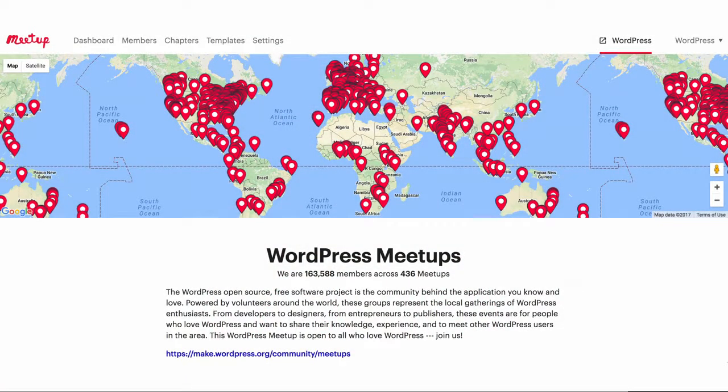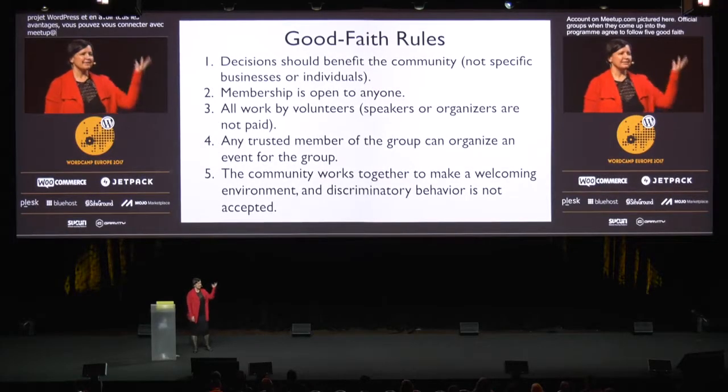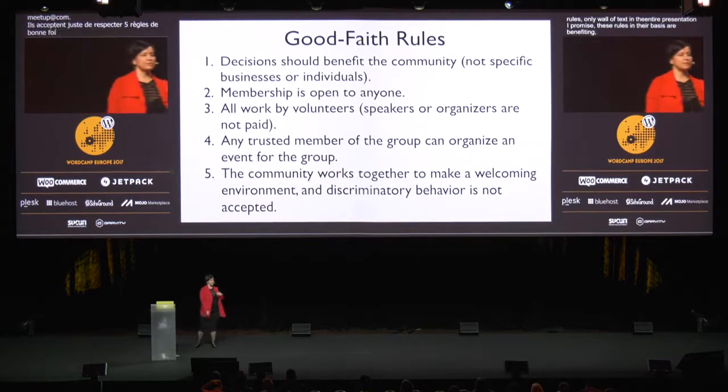The model is open. Anyone can start a meetup group. And if you want to be part of the WordPress open source project's program and take advantage of the benefits that come with that, you can join our chapter account on meetup.com. Official groups, when they come into the program, agree to follow five good faith rules. These rules in their basis are: meetups are organized to benefit the community; membership is open to anyone — that open bazaar; no one is paid to build community, just like with WordPress; anyone can organize; and we create a welcoming environment.